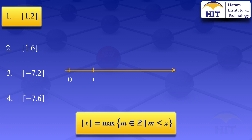So I'll draw a number line and indicate the integers close to 1.2 — writing down 0, 1, 2, and 3 — then marking the value 1.2. We are looking for integers that do not exceed 1.2, which are integers to the left of 1.2: 1, 0, minus 1, and so on. The greatest integer that does not exceed 1.2 is 1. So the floor value of 1.2 is 1.